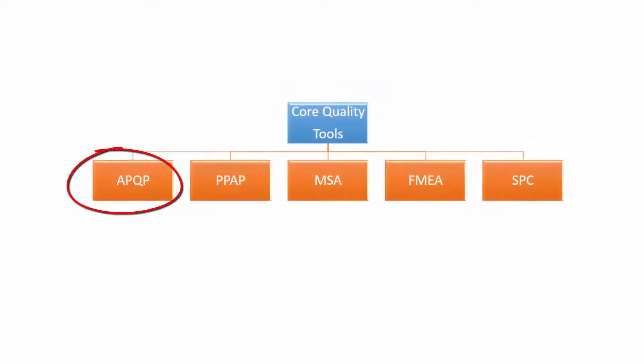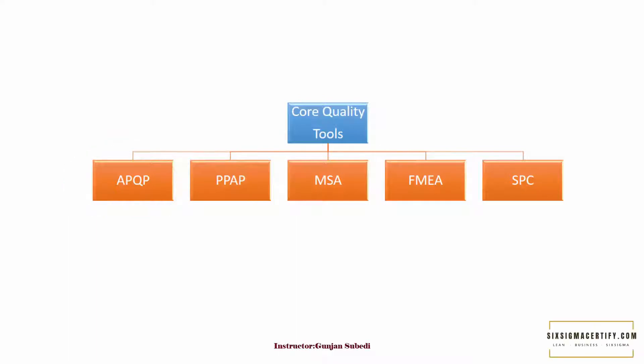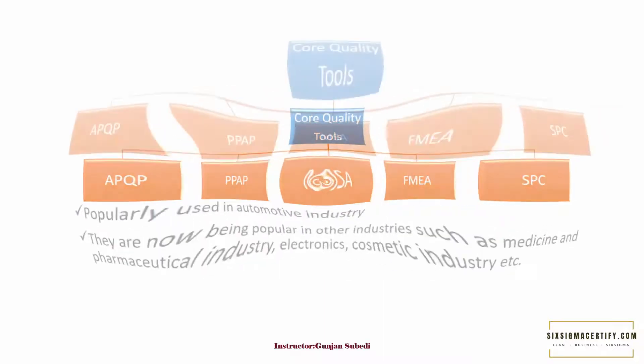In this video, I will be talking about the Advanced Product Quality Planning. Basically, the five core quality tools are APQP, PPAP, MSA, FMEA, and SPC, which we will try to understand in depth in the lectures to come.